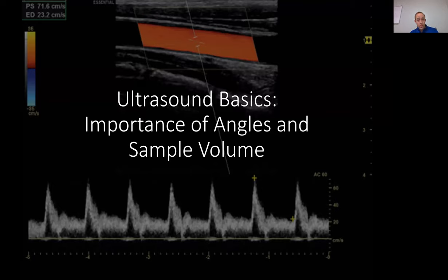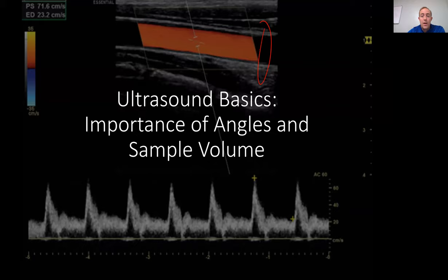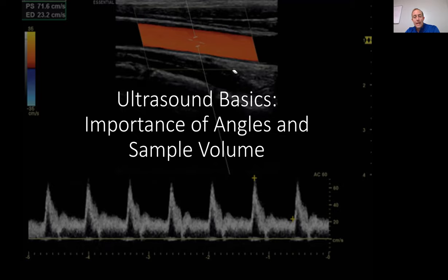We're going to continue our discussion of ultrasound and get into some of the basics — yet most important things — in obtaining successful or accurate images so you can get good diameters and accurate blood velocity measurements. A lot of it comes down to the importance of angles and sample volume. In the previous video we talked about the three different modes of ultrasound: B-mode gives you the picture, pulse wave mode gives you the blood velocity, and color flow mode flashes red or blue depending on movement. The angles are very important in this process.